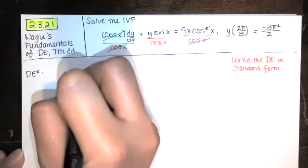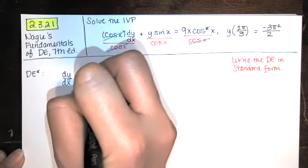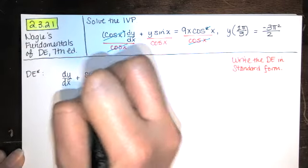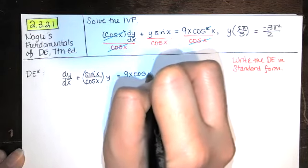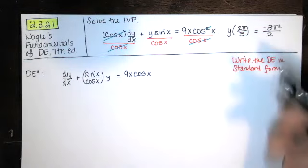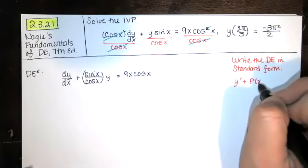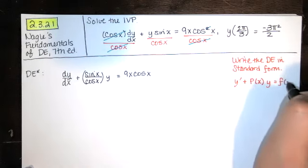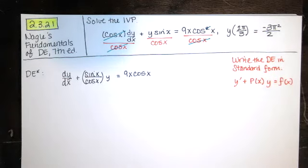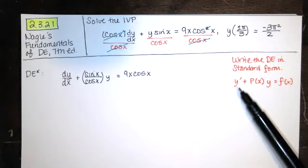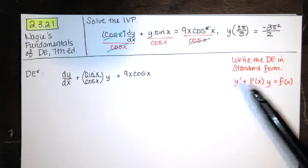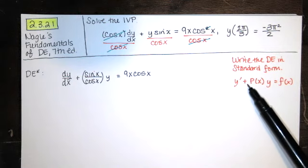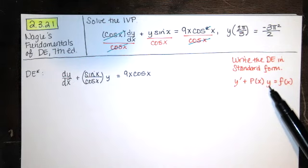I'll label that equation dE star. Standard form — sometimes called general form in other textbooks — is the form in which y′ has a coefficient of one, plus a function of the independent variable times y on the left, equals a function of the independent variable on the right.